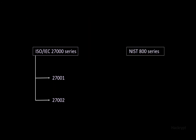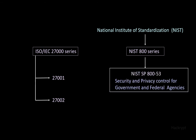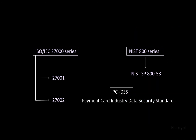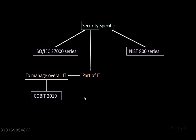Other standards include the NIST 800 series, proposed by the National Institute of Standards and Technology. NIST Special Publication 800-53 provides security and privacy controls for government and federal agencies. NIST also provides the CSF cybersecurity framework, which can be used for smaller organizations. There are also industry-specific controls like PCI DSS, the Payment Card Industry Data Security Standard, used for companies that process online payments or debit and credit cards.